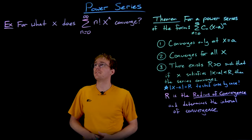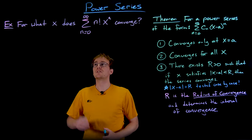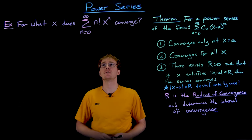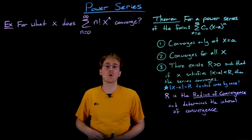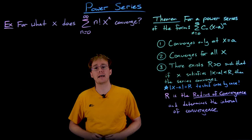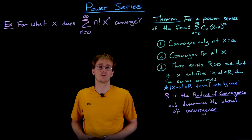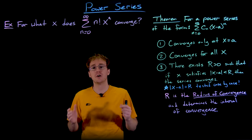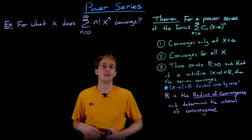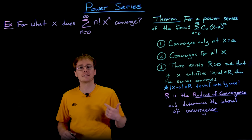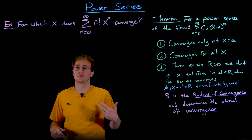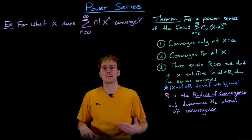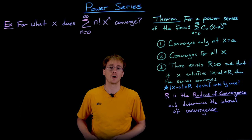For our next example, let's figure out for which values of x the power series — the sum from n equals 0 to infinity of n factorial times x to the power of n — converges. Remember, n factorial is the product of all the integers from 1 up to n. So 4 factorial is 1×2×3×4, and 5 factorial is 1×2×3×4×5, and so on.